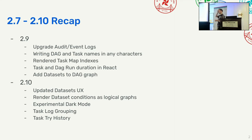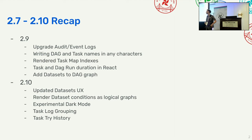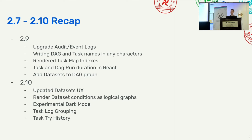A quick recap since the last time I gave this talk — I think 2.7 had just come out for Airflow at the last summit — we've had up to 2.10 get released, and then we announced 3.0 is coming out. Some features that have come out: in 2.9 we updated the audit logs and renamed them to event logs. We also had community contributions where DAG and task names can be written in national characters or even emojis, not just a strict snake_case naming scheme.